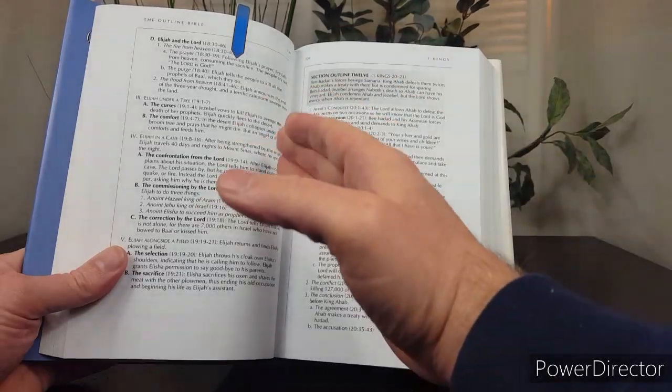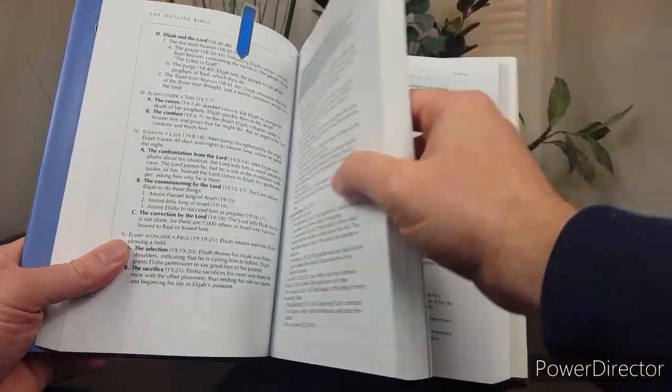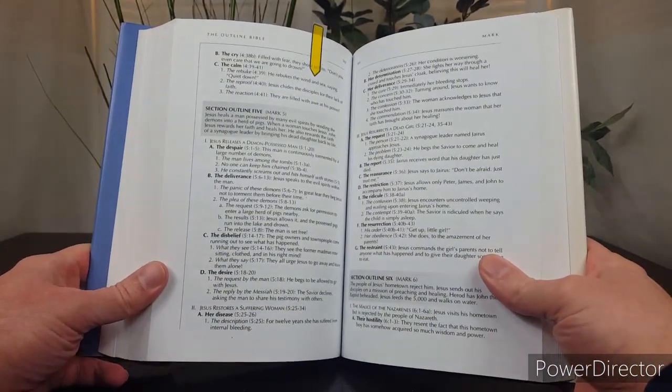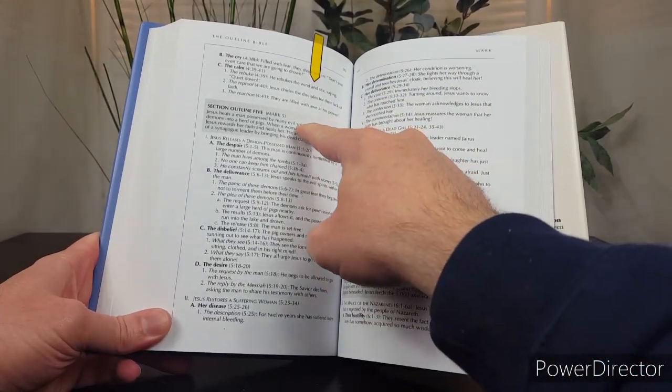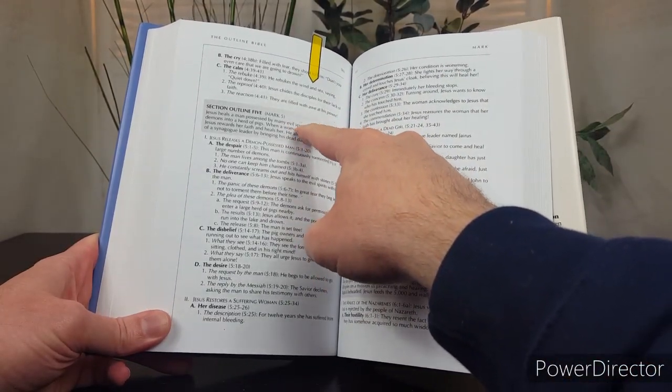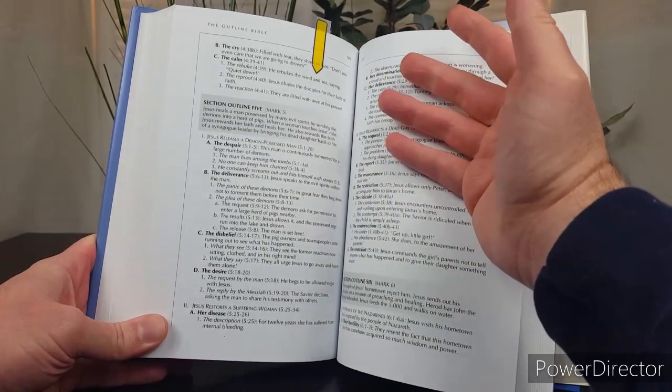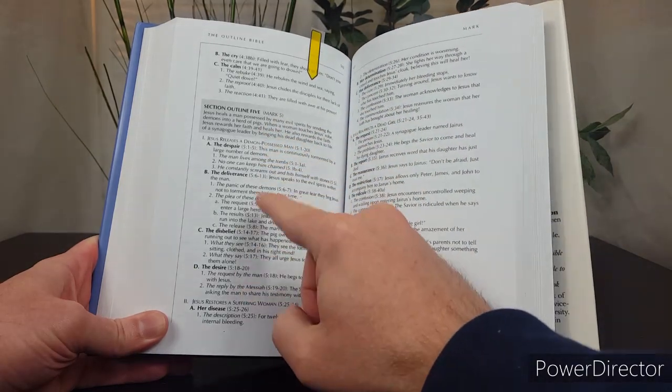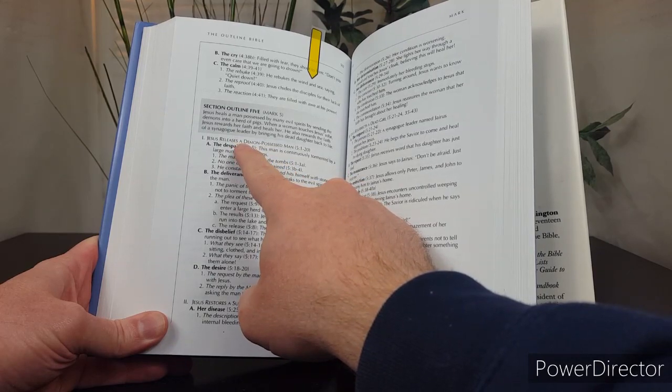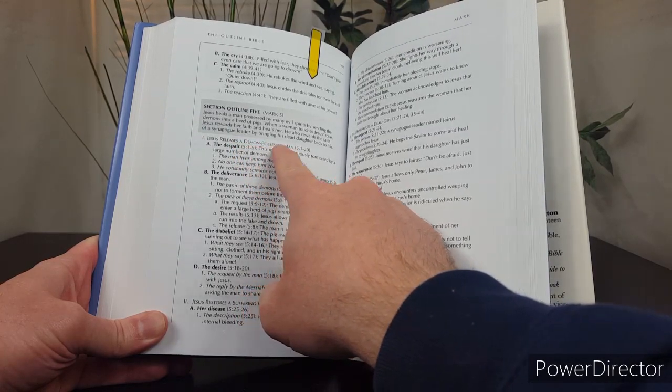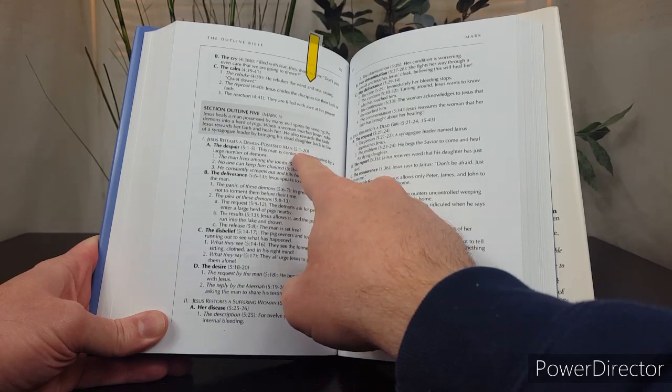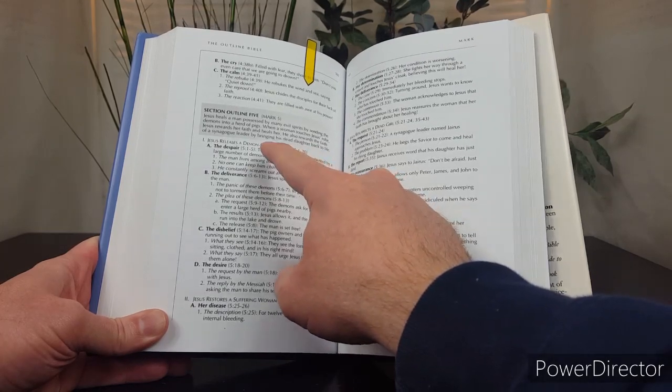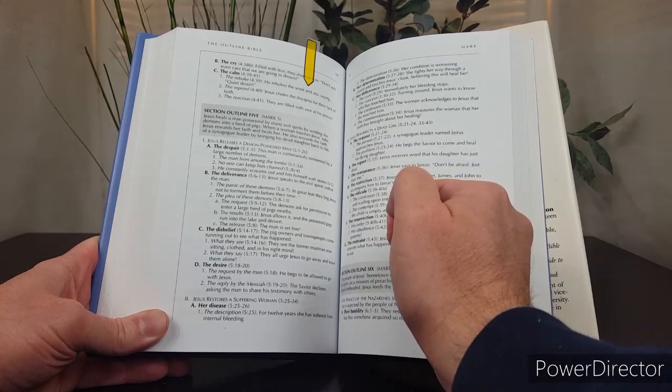So, now, I give you an Old Testament example. Let me give you a New Testament example. And I chose Mark chapter 5. So, at the beginning of the chapter, there is like a four-sentence description of the content of Mark chapter 5. And then, there is the first outline. And Wilmington titles the section, Jesus Releases a Demon-Possessed Man. Chapter 5, Mark chapter 5, verses 1 through 20. Now, Wilmington outlines those 20 verses in four different points. The first one he titles, The Despair.